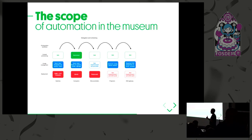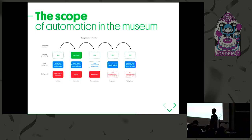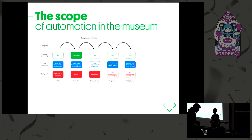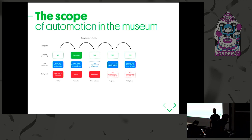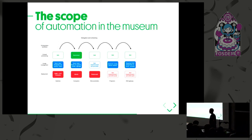The nice thing is we use AWX — Ansible Tower — to delegate this whole package to personnel who aren't experienced in all this automation. For example, turning on the entire museum is done from AWX by someone in security every morning. We can also schedule or redeploy something entirely from scratch at six in the morning before the museum opens.